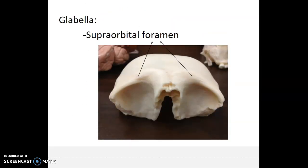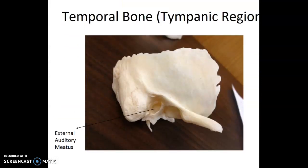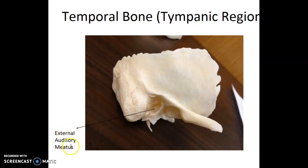Looking at the frontal bone, notice the ridges here, which are called superorbital margins. There will either be a notch or a hole in those ridges called the superorbital foramen or superorbital notch. Next, we have the temporal bone, and we know that our ear fits around here. Our ear canal is literally the canal that makes up the bone portion — it's called the external auditory meatus. External meaning it goes to the outside, auditory meaning hearing, and meatus is another term for a canal.